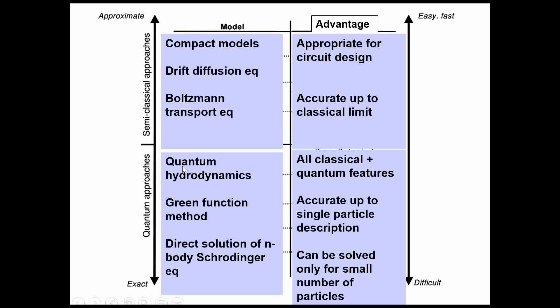If you go for quantum approaches, you need to do quantum hydrodynamics, Green function method, direct solution of n-body Schrodinger equations. The advantage here is they will take care of all the classical and quantum features. Accurate up to single particle description, can be solved only for a small number of particles. Like if the number of particles increase, this will become manually unsolvable. You can see this is easier and faster semi-classical approach, and quantum approach is exact solution which is difficult. This is approximate. The difference between exact and approximate is not much. That's why these Poisson solvers, one-dimensional Poisson solvers, are becoming very useful and easier tools.